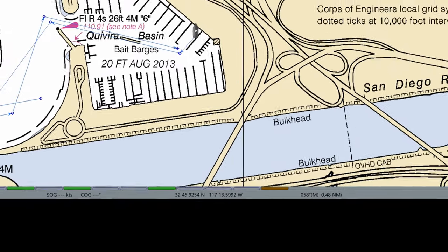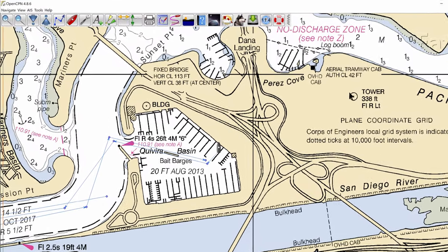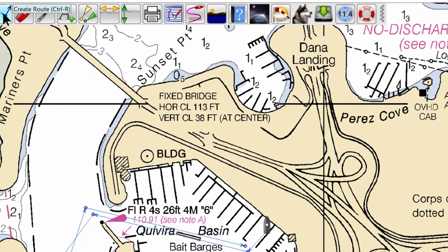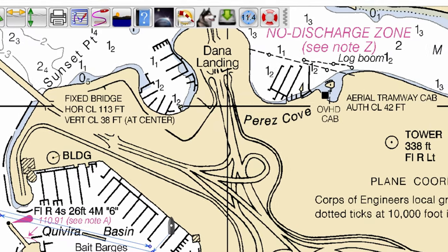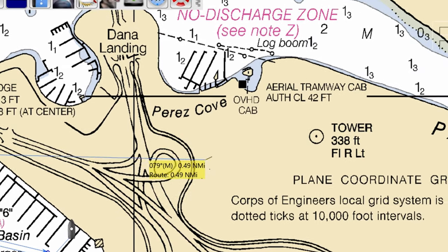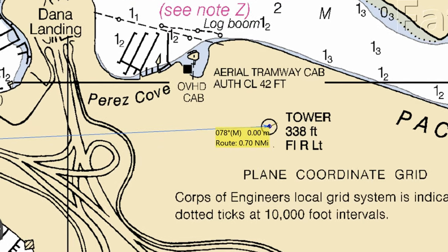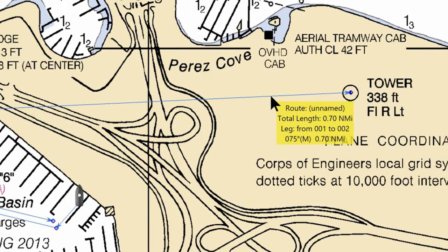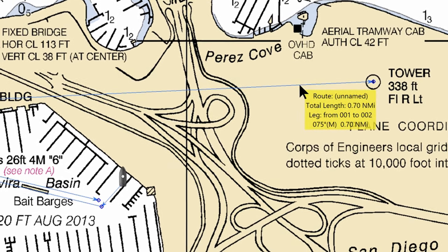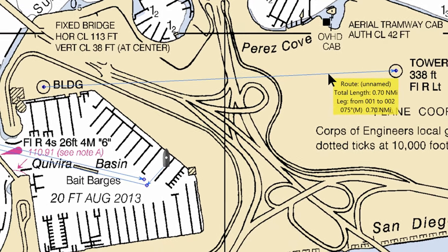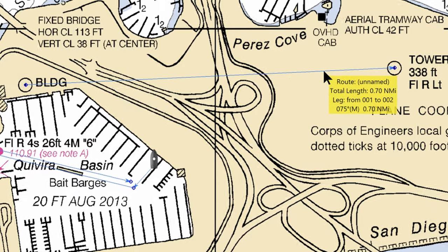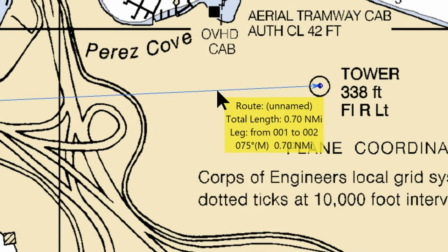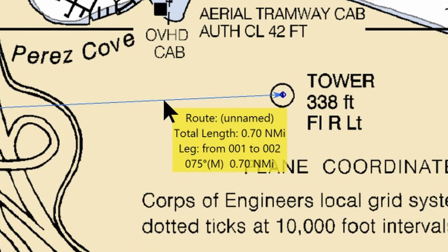We'll use those GPS coordinates in a moment, but first we want to create a route using the routing tool — the little zigzag line. We click on the center dot for the building, then slide across and click on the center dot for the tower. Press the escape key to stop the routing function. Hover the mouse pointer over the route line and a yellow info box appears. The key number is the angle — 75 degrees, marked with an M for magnetic.